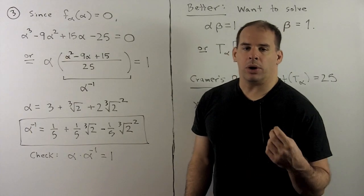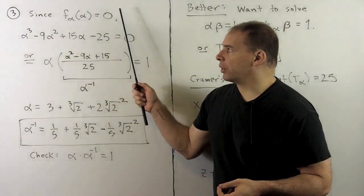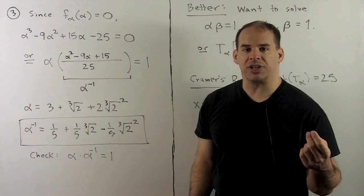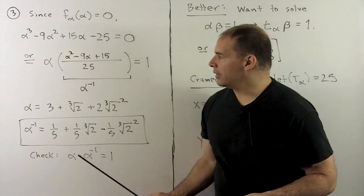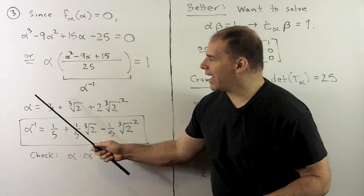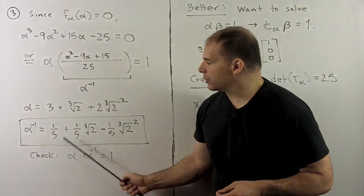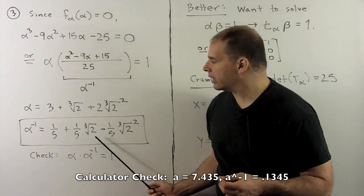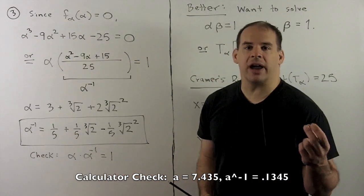For part 3, we want to express alpha inverse as a polynomial in alpha over the rationals. We have f sub alpha of alpha equals zero, so alpha cubed minus 9 alpha squared plus 15 alpha minus 25 equals zero. Moving the 25 to the other side, factoring out an alpha, and dividing everything by 25 gives an equation of the form alpha times something equals 1, so that something is our alpha inverse. Substituting alpha into this expression, alpha inverse equals 1 fifth plus 1 fifth cube root of 2 minus 1 fifth cube root of 2 squared. We check by computing alpha times alpha inverse equals 1, giving our answer to part 3.